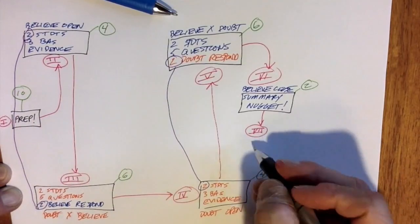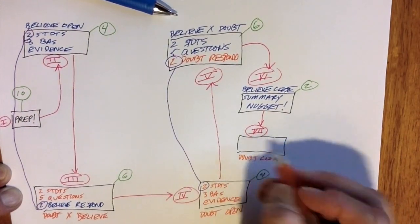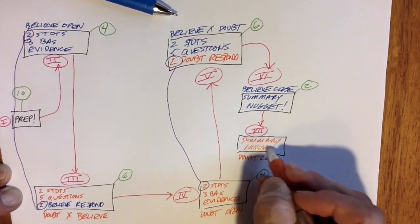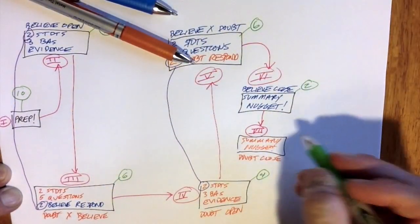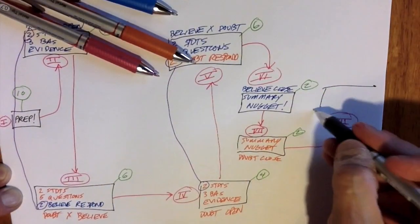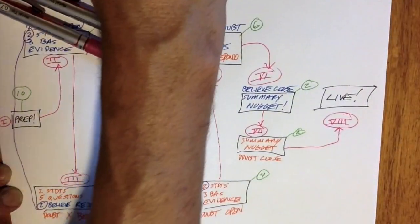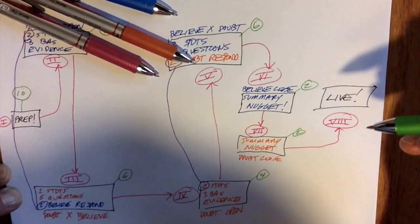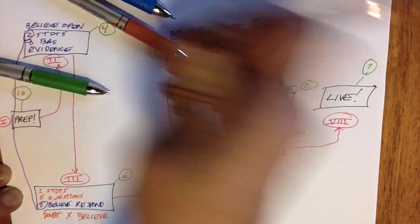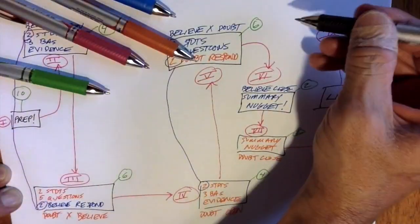Phase seven is one student on the doubt side closing with a summary and a spicy nugget. Then I usually let them go for at least a little time into an open debate format — no rules, no roles, they keep their sides but can just argue with each other. Then I shut things down with a debrief.